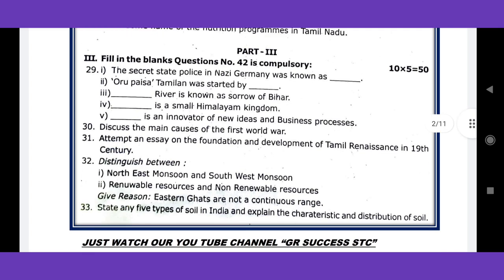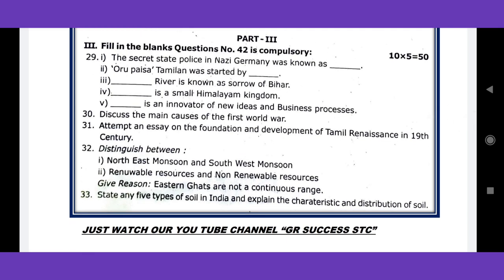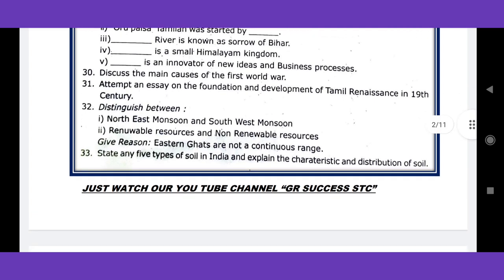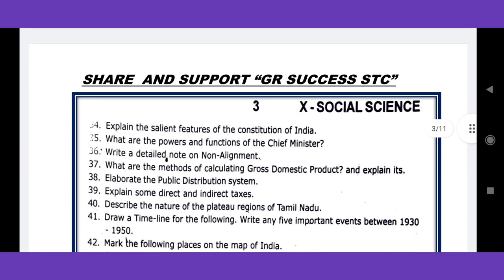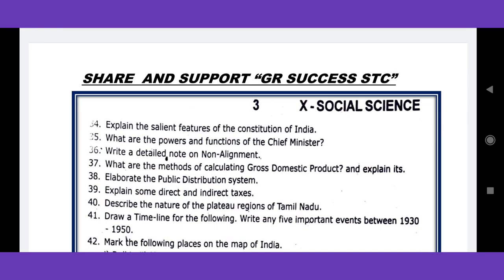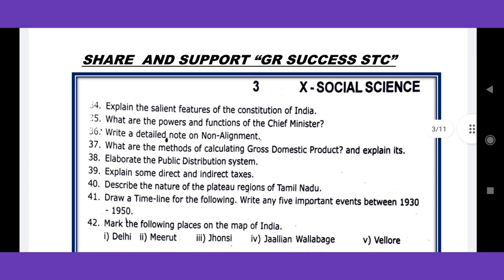Question number 30 — one of the most important five-mark questions — discuss the main causes of the First World War. Question 31: Tamil Renaissance in the 19th century. Question 32: distinguish between northeast monsoon and southwest monsoon, and between renewable sources and non-renewable sources. Question 33: characteristics and distribution of soil. Question 34: salient features of the Constitution of India. Question 35: powers and functions of the Chief Minister. Question 36: non-alignment, and comparison of public distribution systems and direct and indirect tax.